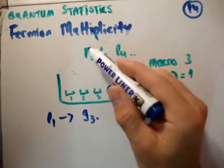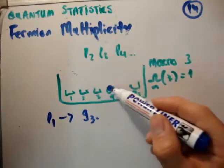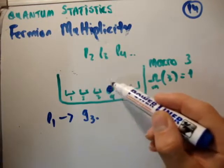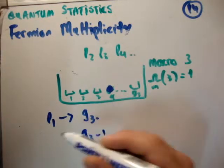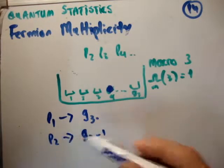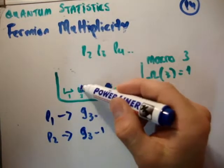Well, particle 2 comes along, and he can't go into this box, because that's what fermions aren't allowed to do. So, he goes into one of the remaining boxes. So, he goes into g_3 minus 1. So, particle 2 has a choice of that many states. And the next one.